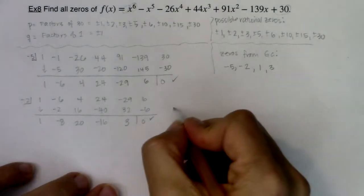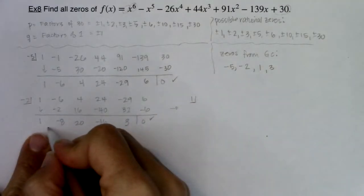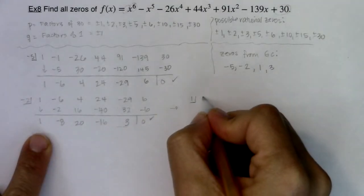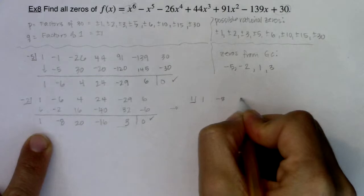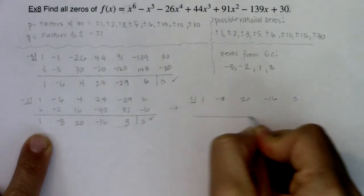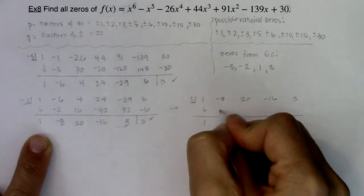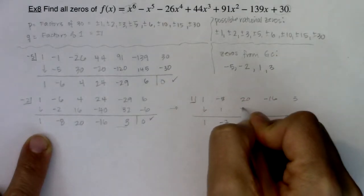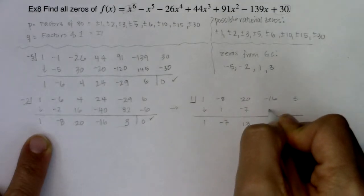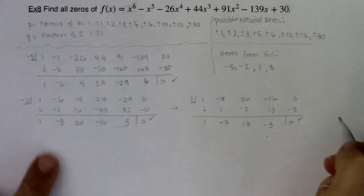I'm going to move over here. Let's do my next zero at one. But again, I want to do it off of the remainder. So 1, -8, 20, -16, and 3. And I should get zero. So here we go. One, -7, -7, 13, 13, -3, -3, zero. We're getting close.